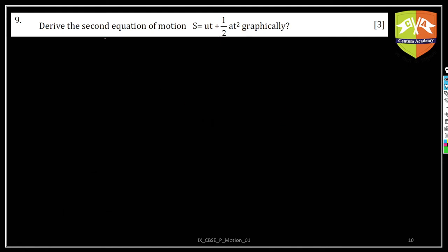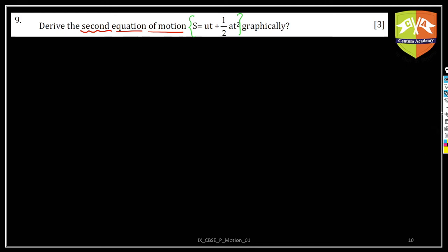This is the ninth question: derive the second equation of motion. We have to derive the second equation of motion, which is given as s = ut + ½at². We'll do this graphically, but first let's understand the meaning of the second equation.